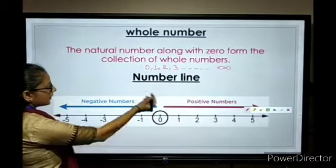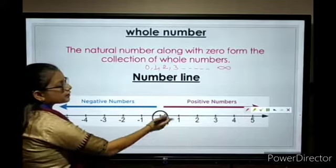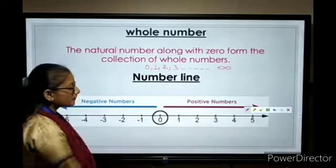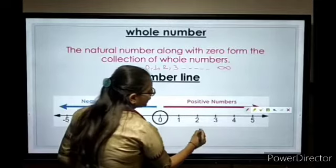Next, number line. How does the representation look? On the number line, 0 is neither a negative nor a positive number. We all know that positive numbers, 0 is the right hand side of the number.